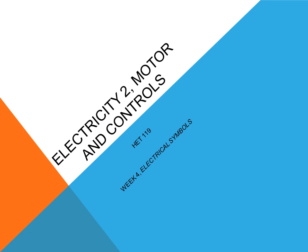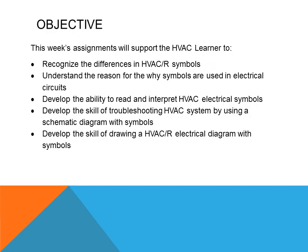This is HET 119, Electricity 2, Week 4. The objective of this lesson is for the HVAC learner to recognize the difference in HVAC refrigeration symbols, understand the reason why symbols are used in electrical circuits, develop the ability to read and interpret HVAC electrical symbols, develop the skill of troubleshooting HVAC systems by using a schematic diagram with symbols, and develop the skill of drawing an HVAC refrigeration electrical diagram with symbols.